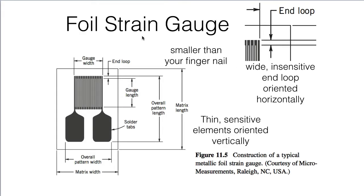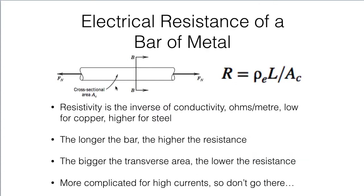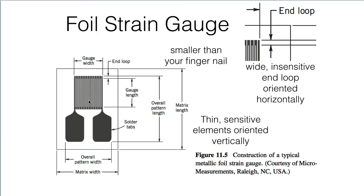And what we'll do that with is a foil strain gauge. And you looked at one last week. If you looked closely, you would have seen two fairly large tabs here for wires to connect to so that we could put it into a circuit. And then some little tiny lines going back and forth. These are the resistance elements. These are the bars. This electrical resistance of a bar of metal, these are like a bunch of tiny little bars that we're going to stretch in this direction. So we're going to have these thin sensitive elements that are oriented vertically.